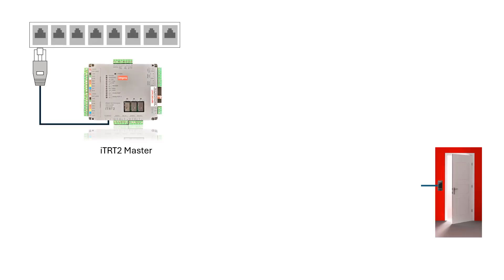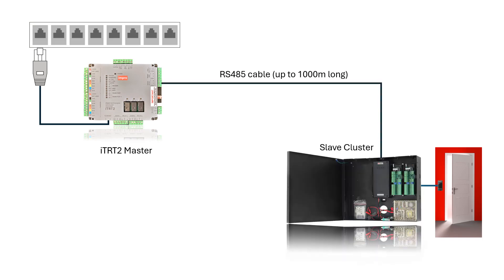In this example, the RTRT2 master controller is mounted near an Ethernet socket and the slave cluster module is mounted at the remote point near the door where the reader is needed.